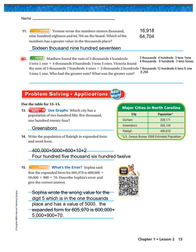Number twelve is tricky. Matthew found the sum of three thousands, four hundreds, three tens, one one plus four thousands, eight hundreds, three tens, five ones. Three thousands plus four thousands is seven thousands; four hundreds plus eight hundreds is twelve hundreds; three tens plus three tens is six tens; one one plus five ones is six ones. That gives eight thousand two hundred and sixty-six.